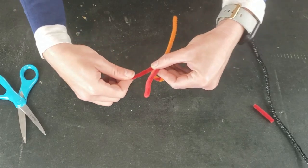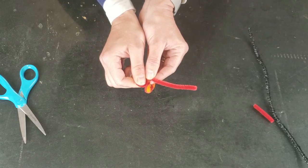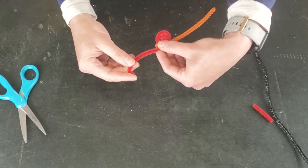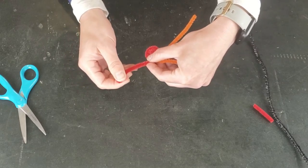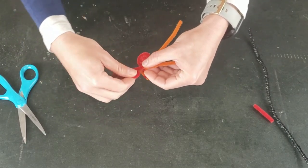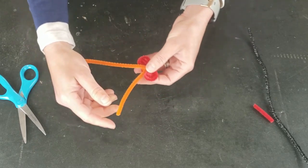And then all we have to do to make our wings is start folding the pipe cleaner on itself in a flat spiral. So just taking the end and twisting and pinching it in between your fingers to create a little flat spiral.